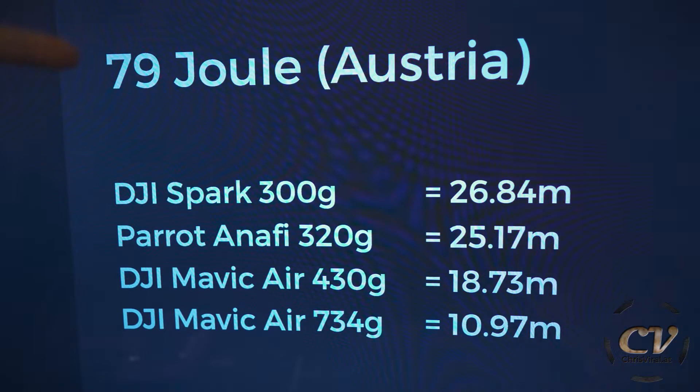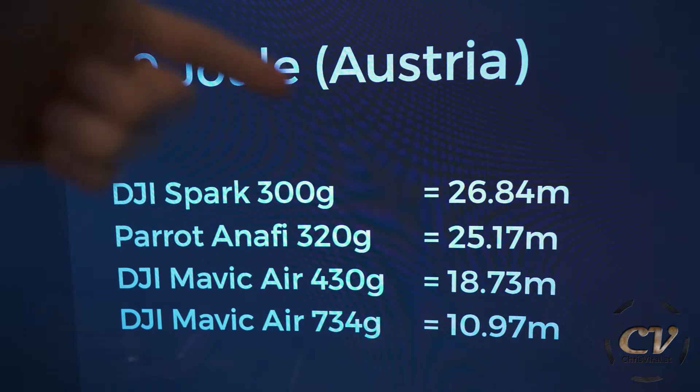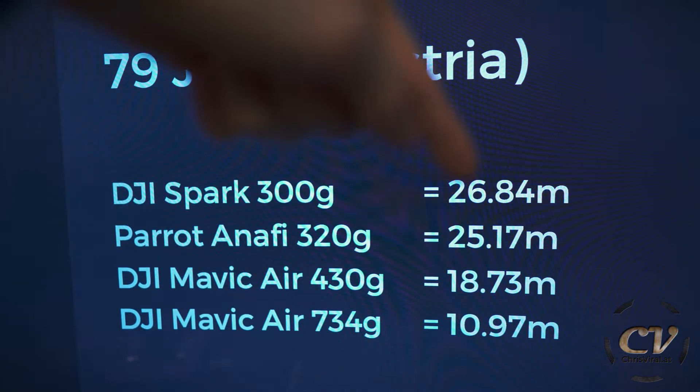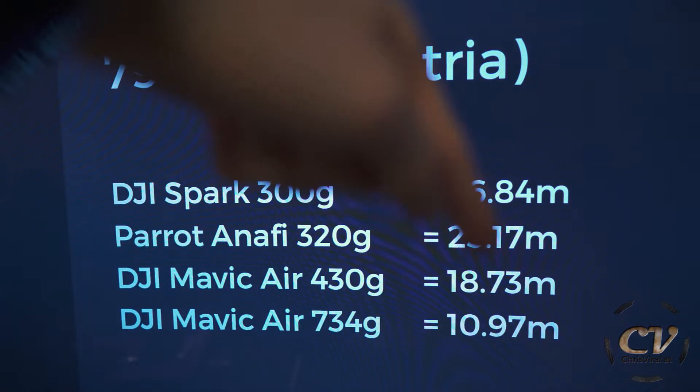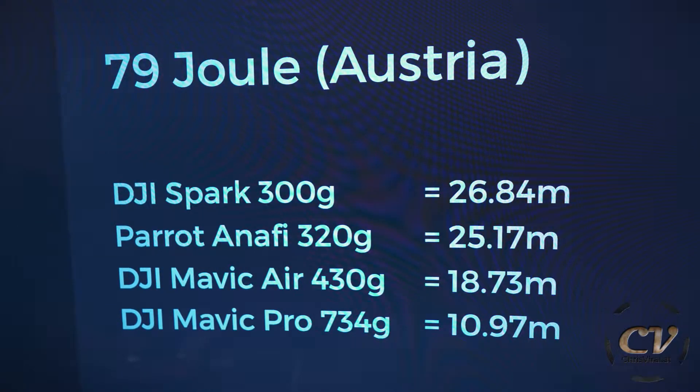In Austria, you're allowed to generate 79 joules of energy, so we know E, we know g, and we know the mass. Here are the max height examples for the same drones: DJI Spark — almost 27 meters. Parrot Anafi — 25 meters. DJI Mavic Air — 18 or 19 meters. And the Mavic Pro — 11 meters. This is fairly interesting knowledge. I thought I wasn't allowed to buy the Air or the Pro because of the weight, but that's just a myth. Freaking weight doesn't matter — it's actually this 79-joule barrier. I feel kind of stupid, but it's super interesting nevertheless.